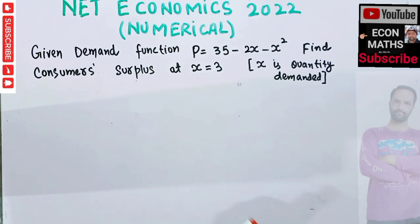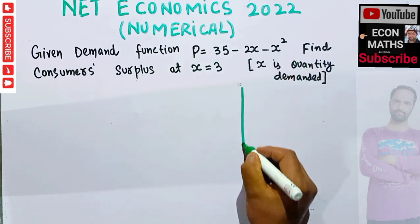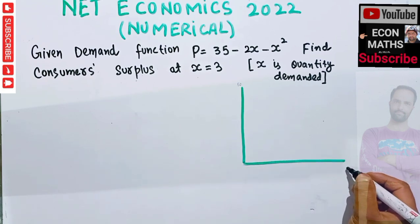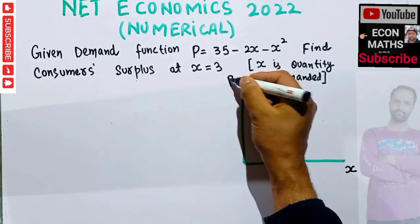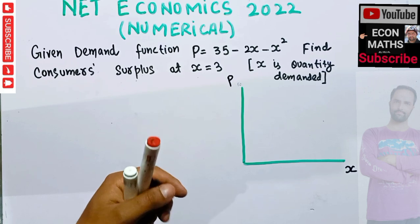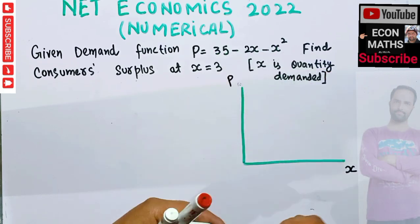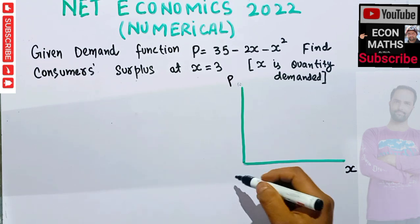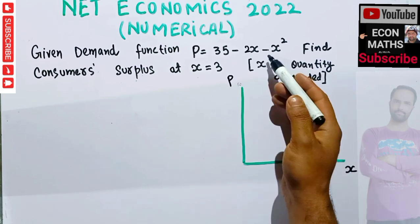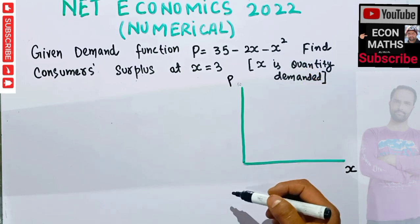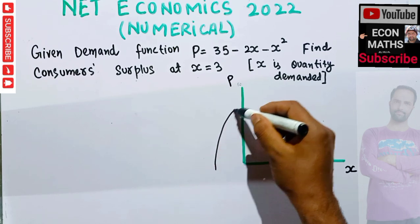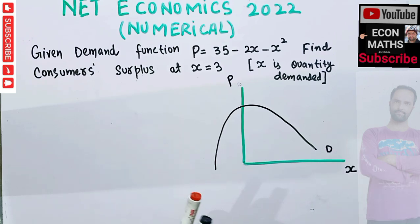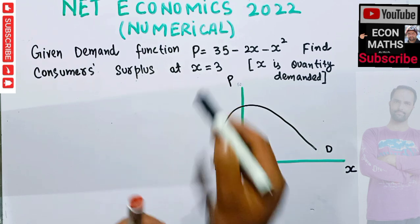If we draw the graph of this demand curve, we have quantity on the horizontal axis and price on the vertical axis. We have a nonlinear demand function, so its graph will be a curve that is upward convex. Since the coefficient of x is negative, its graph will look like this — this is our demand curve.